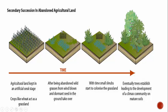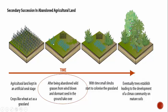Looking at this example of abandoned agricultural land: we see agricultural land kept in an artificial seral stage. After being abandoned, wild grasses from wind-blown and dormant seed in the ground take over, and eventually trees are established. The key part is that before this land was plowed for farming, there was life there. Because there was life before it was plowed for crops, it's called secondary succession. Secondary succession means life is happening for a second time, returning back to its climax community.